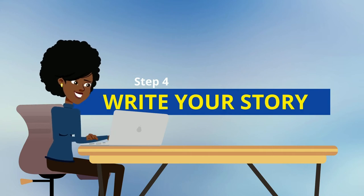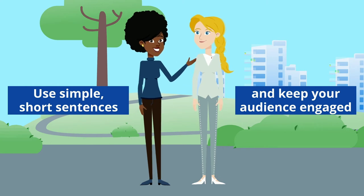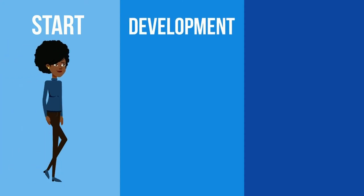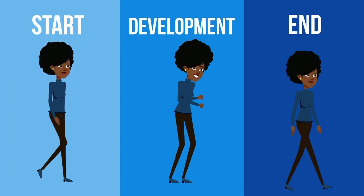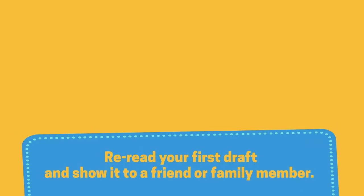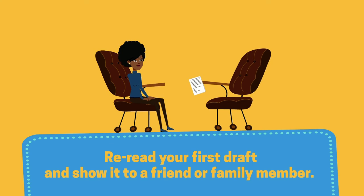Step 4: write your story. Now it's time to write your story down. Imagine you are telling this story to a friend. Use a fairly informal style, simple short sentences, and keep your audience engaged. Remember, stories have a beginning, a middle and an end — but a really good story does not necessarily follow a chronological order. Re-read your first draft and show it to a friend or family member; they might spot errors that you might not have seen. Even professional script writers and journalists need proofreaders.